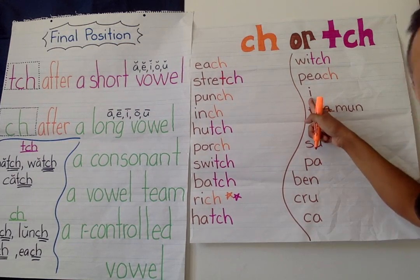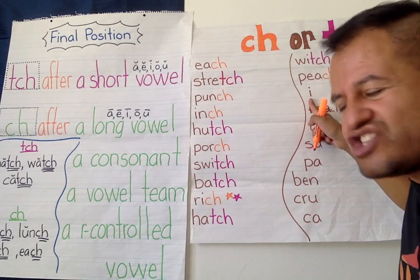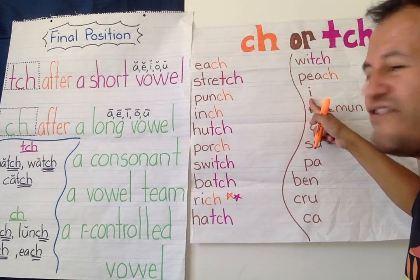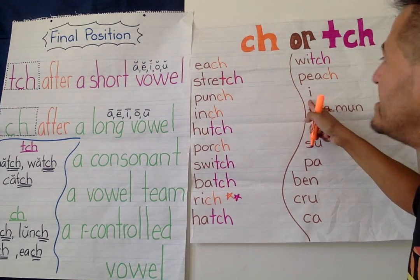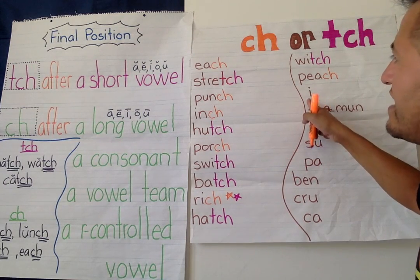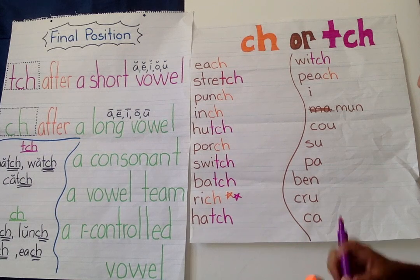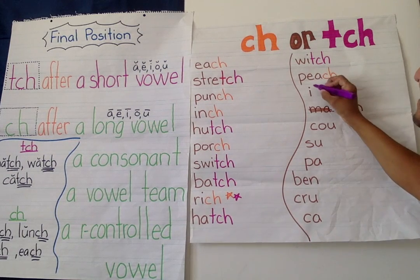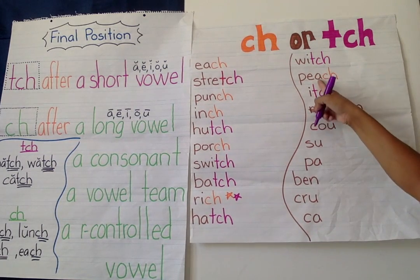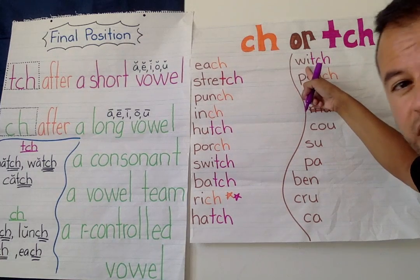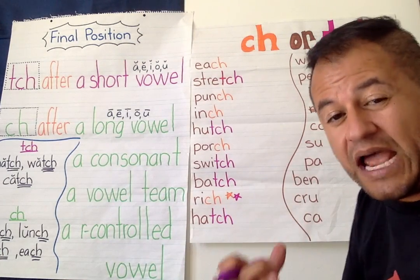I-C-H. "Itch." I-I-I-C-H. I've heard of an "itch" — there's the vowel, the short vowel I. Short vowel I, T-C-H. I'm really looking at these letters and thinking about the sounds that I know they make.